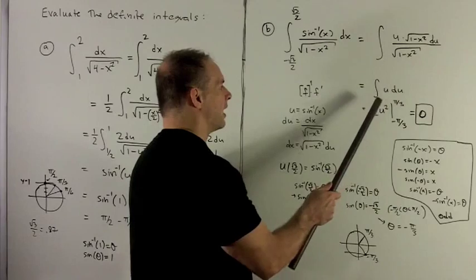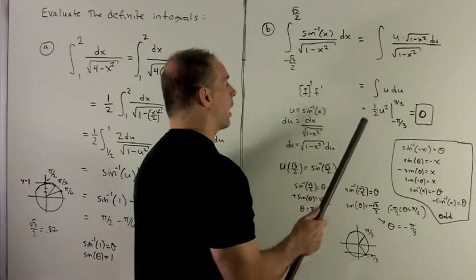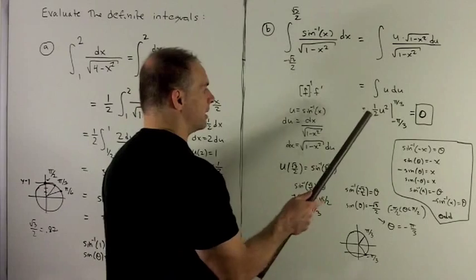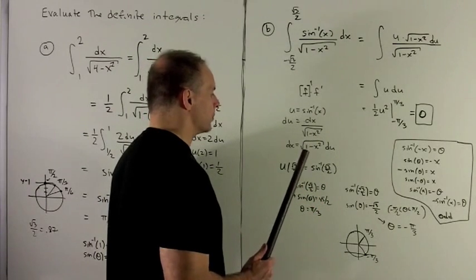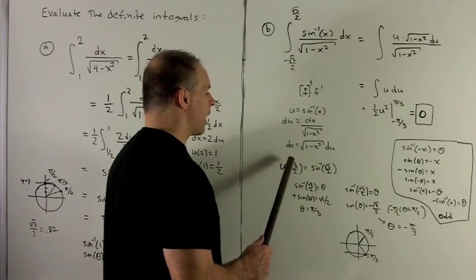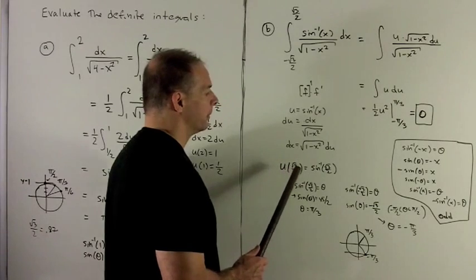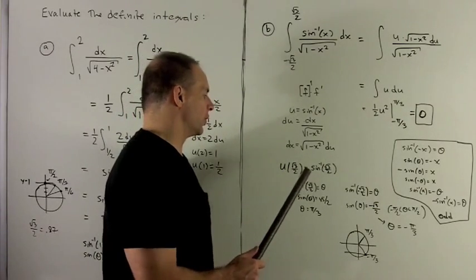So I take the antiderivative of that, and that gives me one half u squared. Now, I need my u limits, so let's see how we get those. Well, if I put in radical 3 over 2 into u, I'm looking at sine inverse of radical 3 over 2.